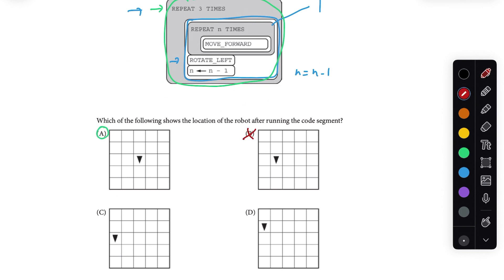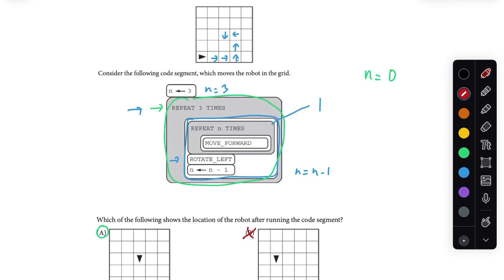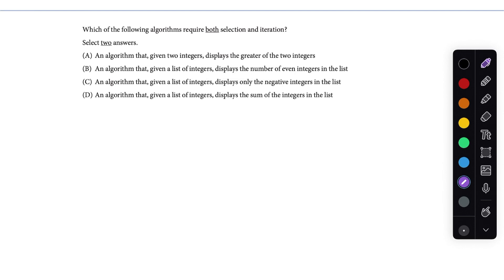B does not work because it's not in the right spot, and C and D also do not work. The way you want to solve this problem is to go slowly and make sure you're doing all the logic, noticing that you'll be modifying how many times you're running the inner loop as you go through the outer loop. Moving on to the next problem.